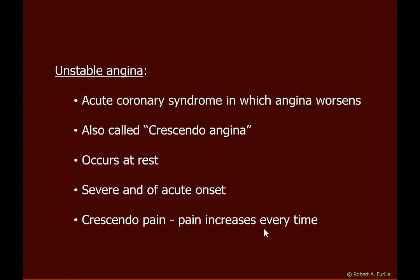Unstable angina, which we also call acute coronary syndrome or crescendo angina, occurs when angina worsens. It is unstable because the plaque is softer and susceptible to rupturing. If it ruptures, a thrombus forms and that thrombus causes an obstruction; ischemia occurs and you sense severe acute pain. It can even occur at rest because the plaque can rupture at any time, and it is called crescendo angina because each episode gets a little bit worse.